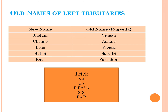The old names of these rivers as per the Rigveda were: Jhelam — Vitasta, Chinab — Asikni, Beas — Vipasa, Sutlej — Satudri, and Ravi — Parushni. The trick to remember these: VJ for Vitasta-Jhelam, CA for Chinab-Asikni, Vipasa-Beas (B for Beas, Pasa for Vipasa), Sutlej and Satudri both start with S, and Ravi-Parushni (R for Ravi, P for Parushni).